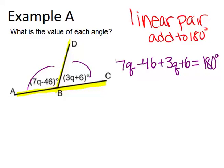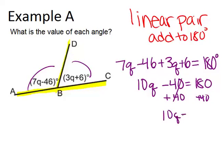Now you want to solve this using your algebra skills. So first combine like terms, and you get 10Q minus 40 equals 180. When you add 40 to both sides, you end up with 10Q equals 220, which means Q equals 22.